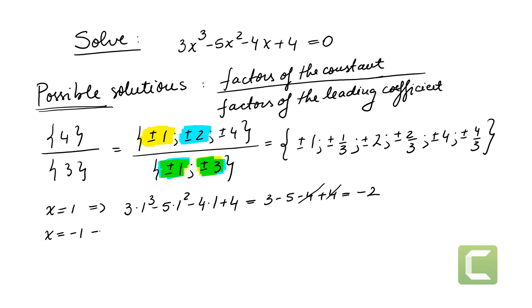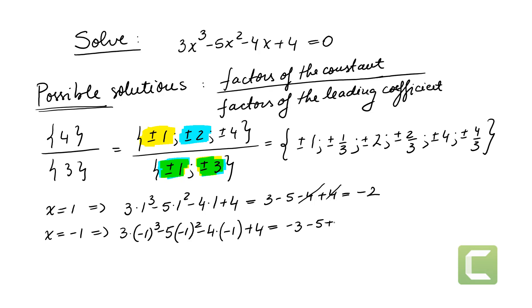Let's check x equals negative 1. We get 3 times (−1) cubed minus 5 times (−1) squared minus 4 times (−1) plus 4, which gives negative 3 minus 5 plus 4 plus 4, equal to 0. So x equals negative 1 is indeed a solution.